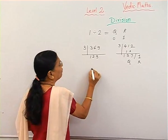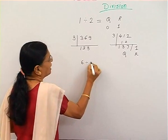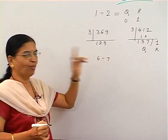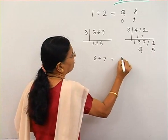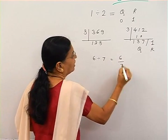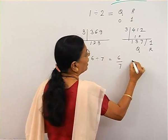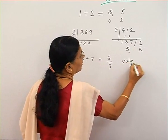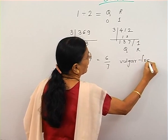But what happens if I divide six by seven? Six is smaller than seven, so when I divide six by seven I call it a vulgar fraction.